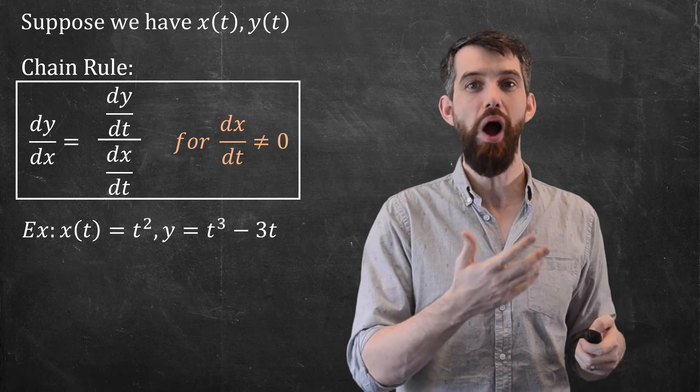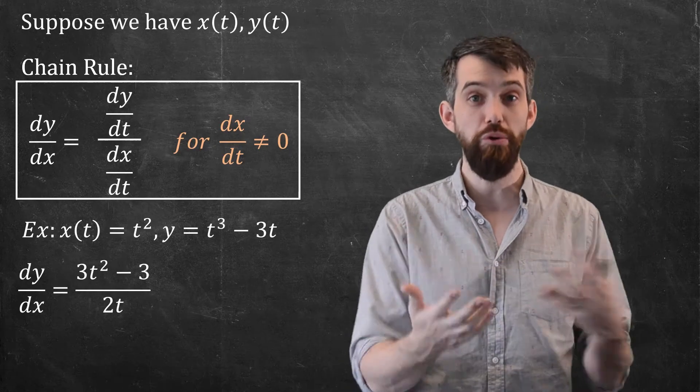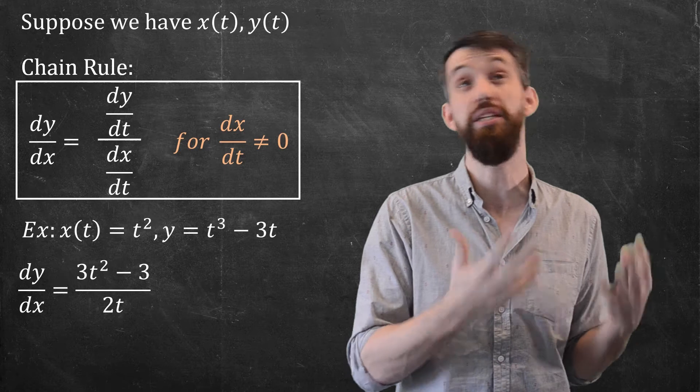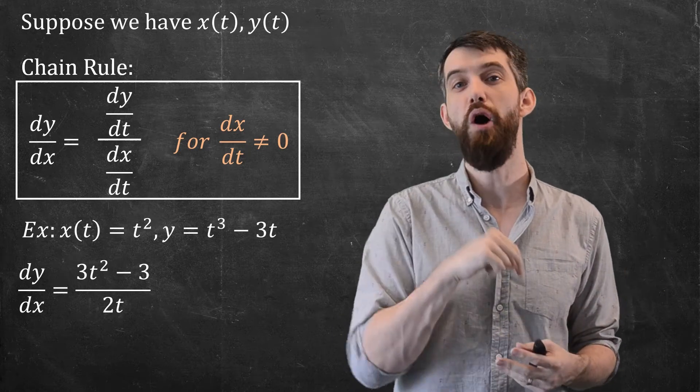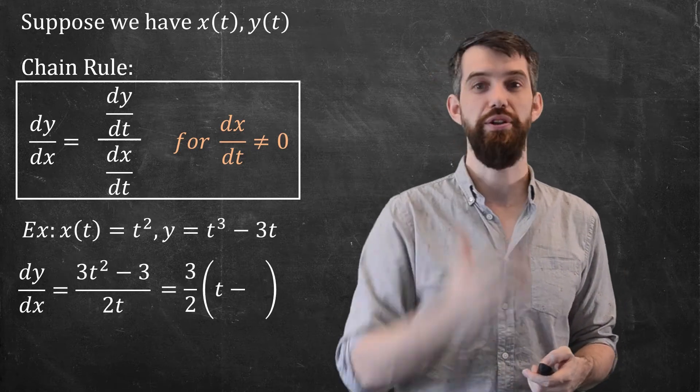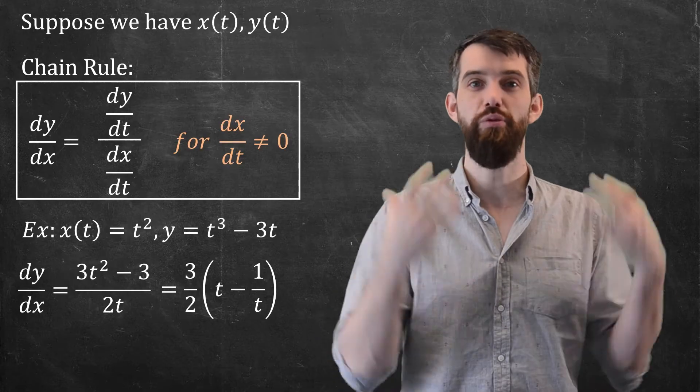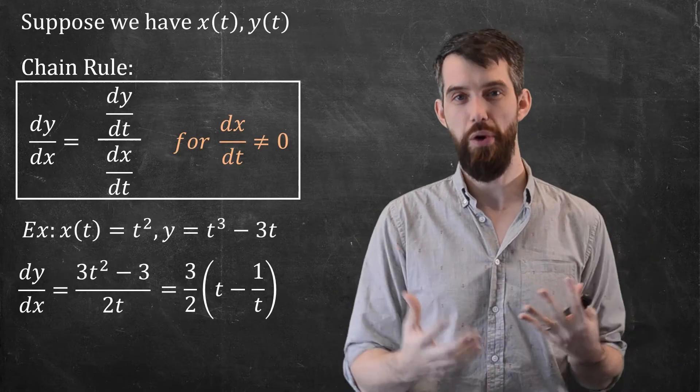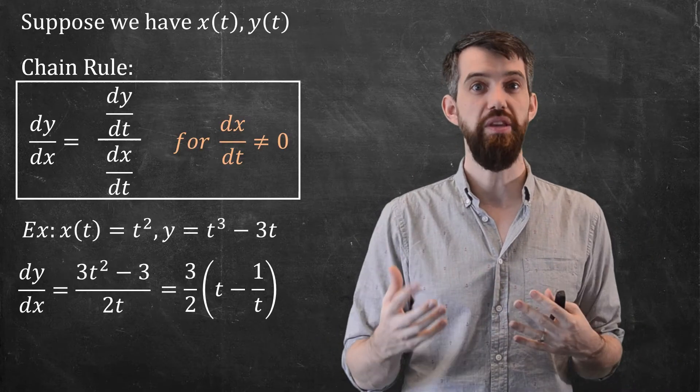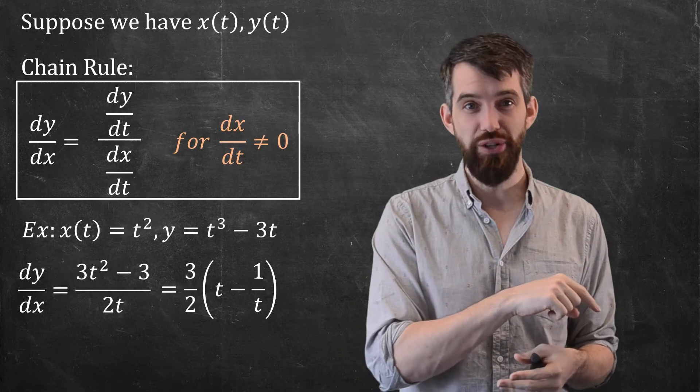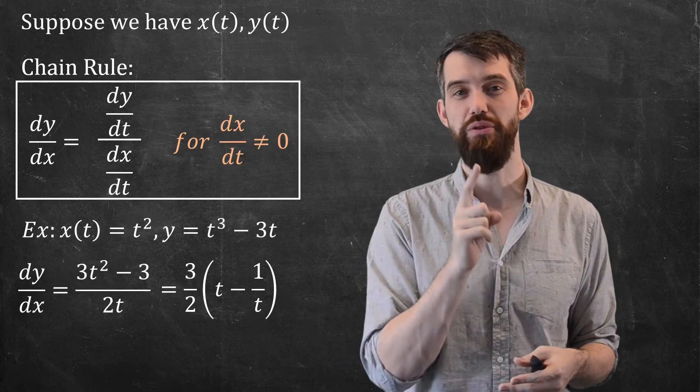If I want to compute dy/dx, it's just going to be this quotient. In the numerator, you get the y prime, which is 3t² - 3. In the denominator, you get 2t. And if I want to, I can just clean it up with a little bit of algebra: (3/2)(t - 1/t). So this tells me the slope of the tangent line at some specific value of t.